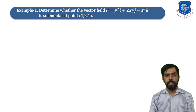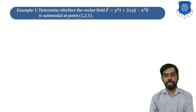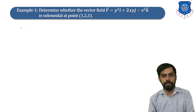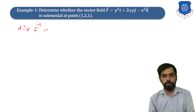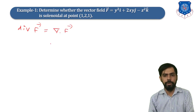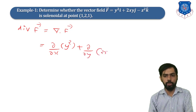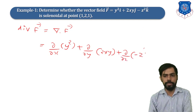First example: determine whether the vector field f = y² i + 2xy j − z² k is solenoidal at point (1, 2, 1). To prove this, we will find the divergence of f, which is given by del dot f = ∂(y²)/∂x + ∂(2xy)/∂y + ∂(−z²)/∂z.